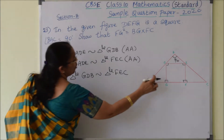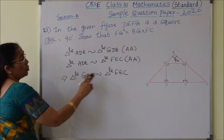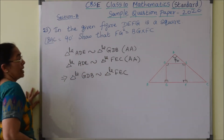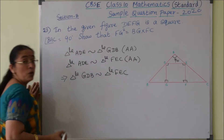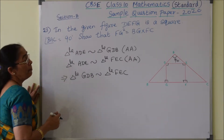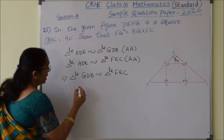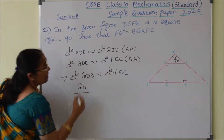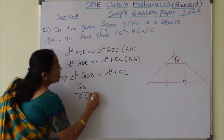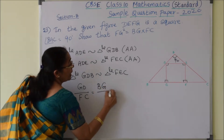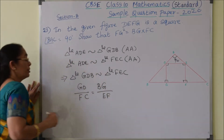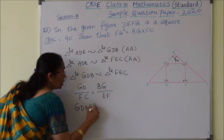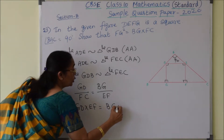Now we can write the ratio for these two similar triangles GDB and FEC. By writing the ratios, GD divided by FC is equal to BG divided by EF. Now by cross multiplication, GD into EF is equal to BG into FC.